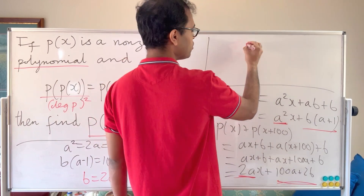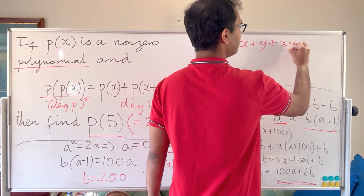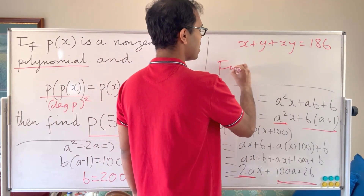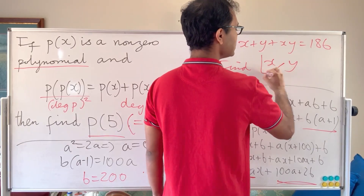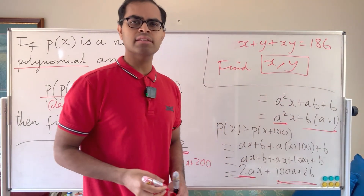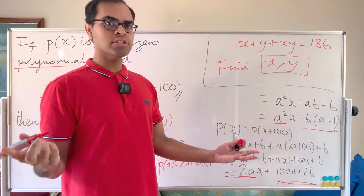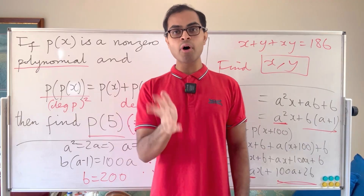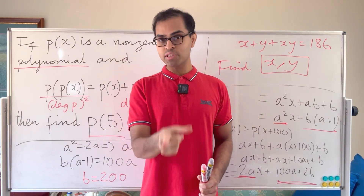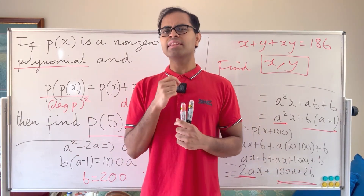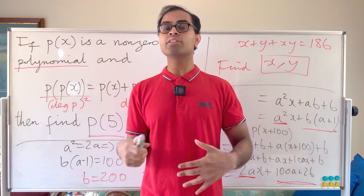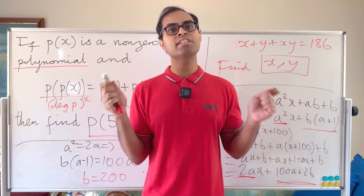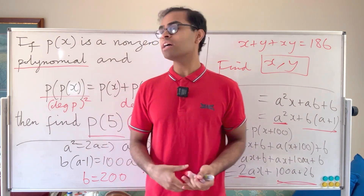Two fun related videos: the first is the problem where x + y + xy = 186 with x and y positive integers — there's only one equation in two variables, so how do we solve it? The second is the proof that the harmonic series 1 + 1/2 + 1/3 + 1/4 + ... diverges to infinity, accessible to everyone through a beautiful argument with fractions.